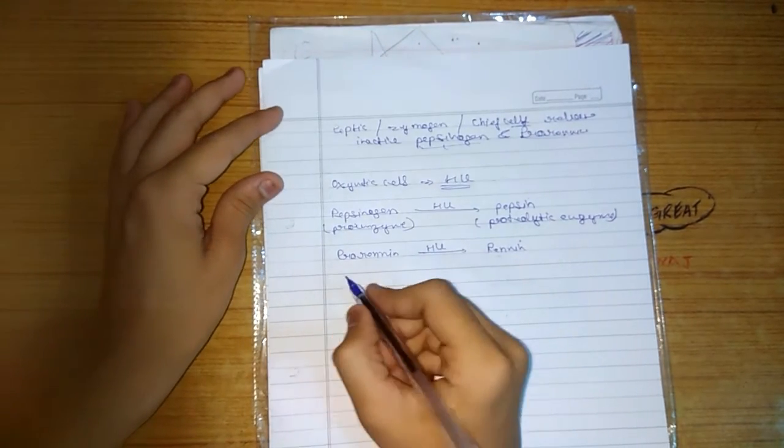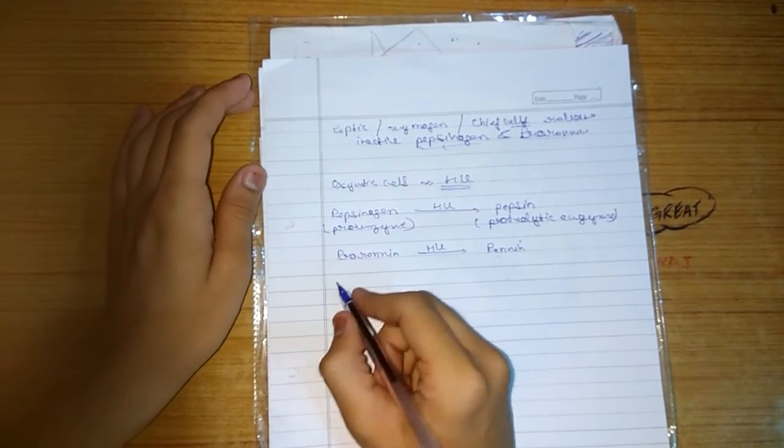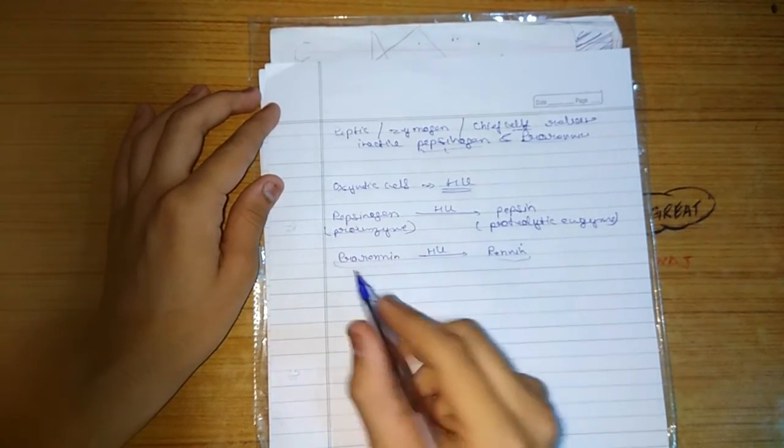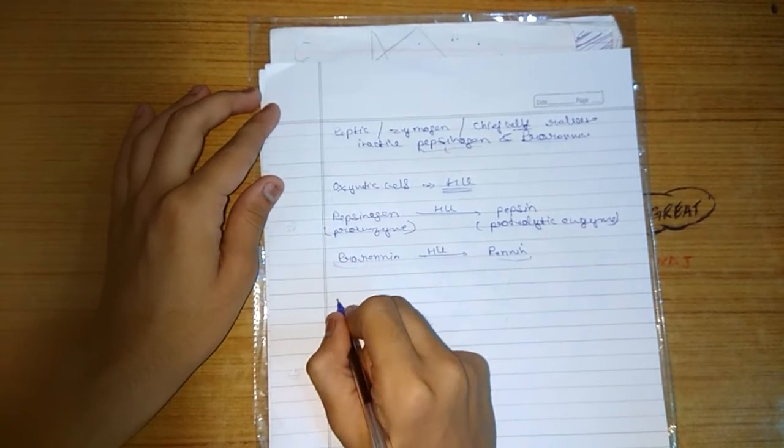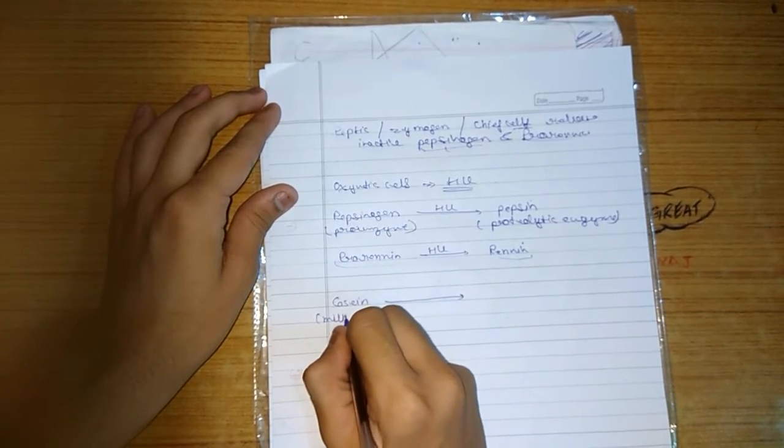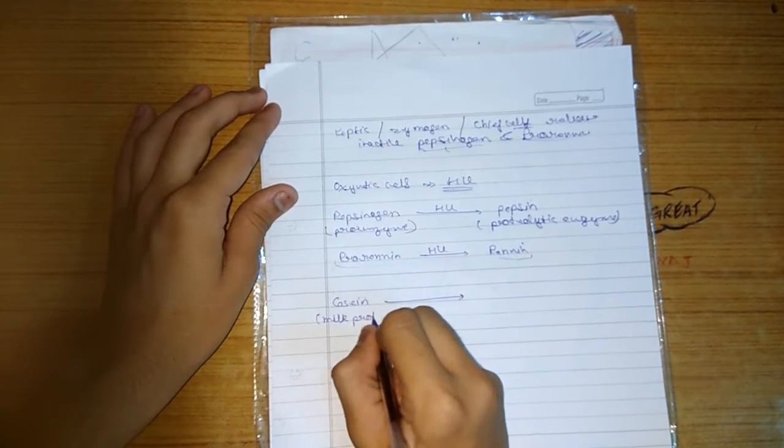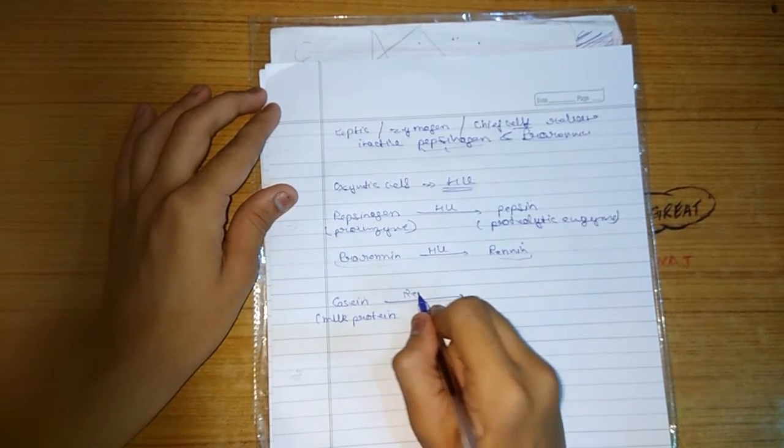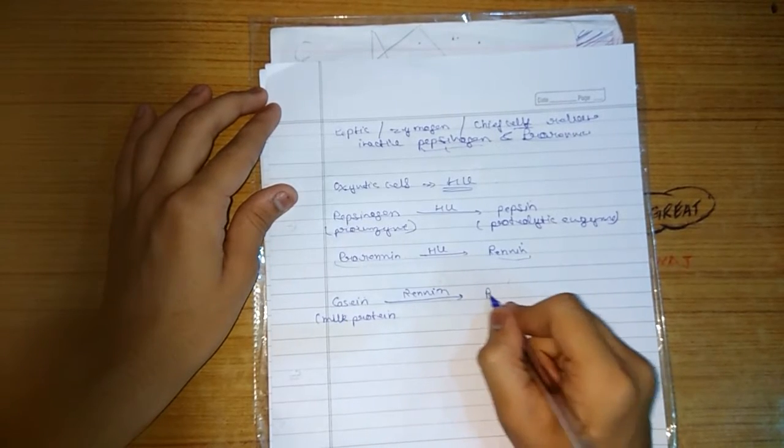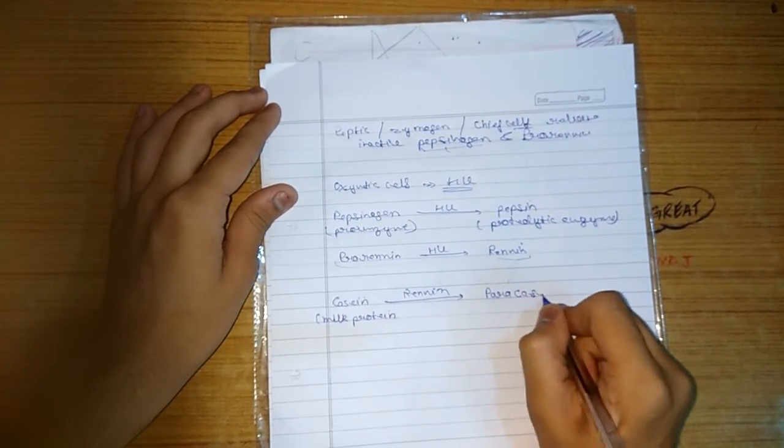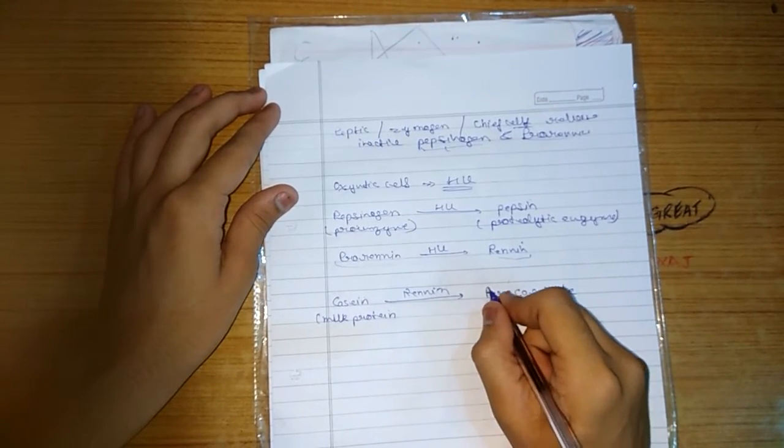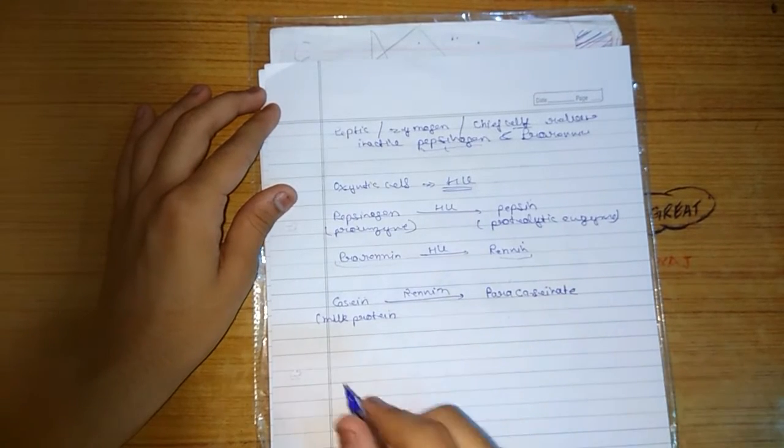So friends, mainly the milk protein consists of protein which is known as casein. So the action of renin on the casein is shown below. In the presence of renin, it converted into the paracaseinate. Paracaseinate, this is a soluble part.